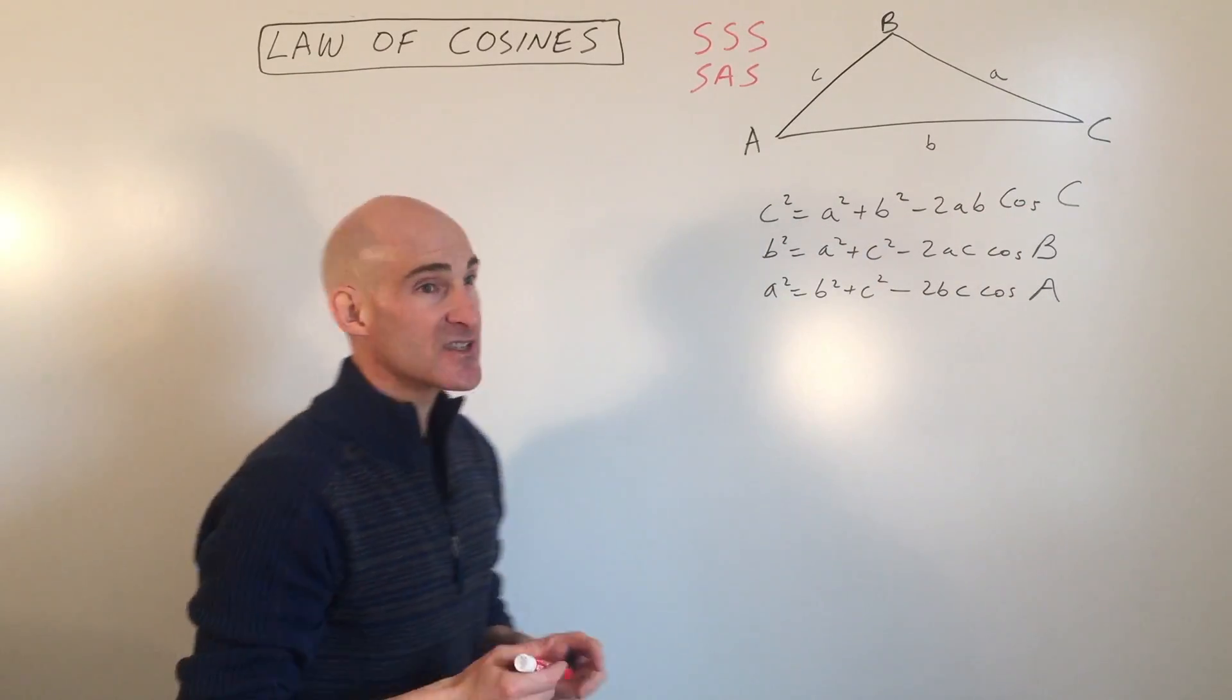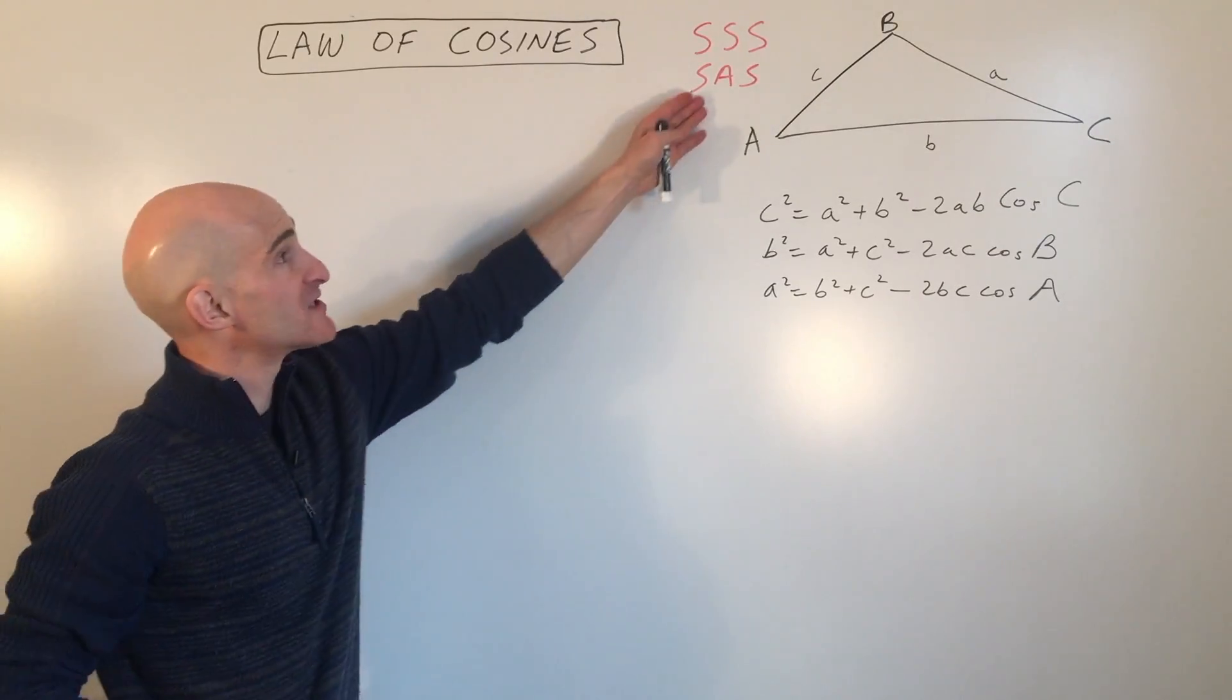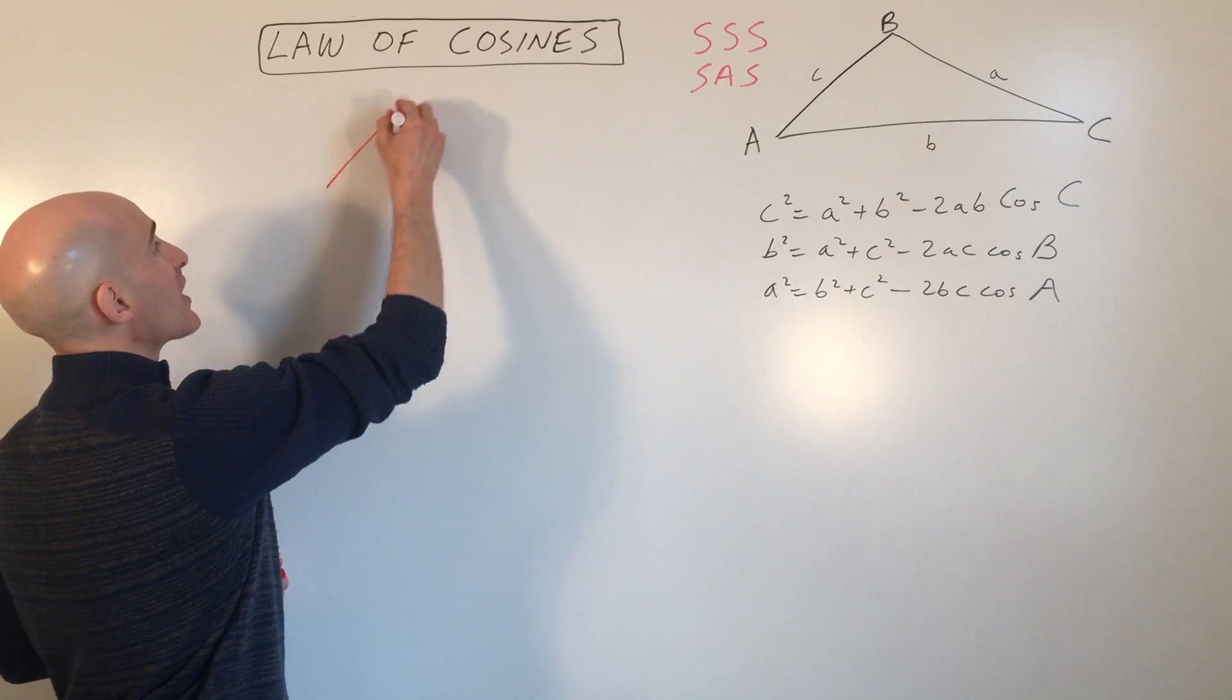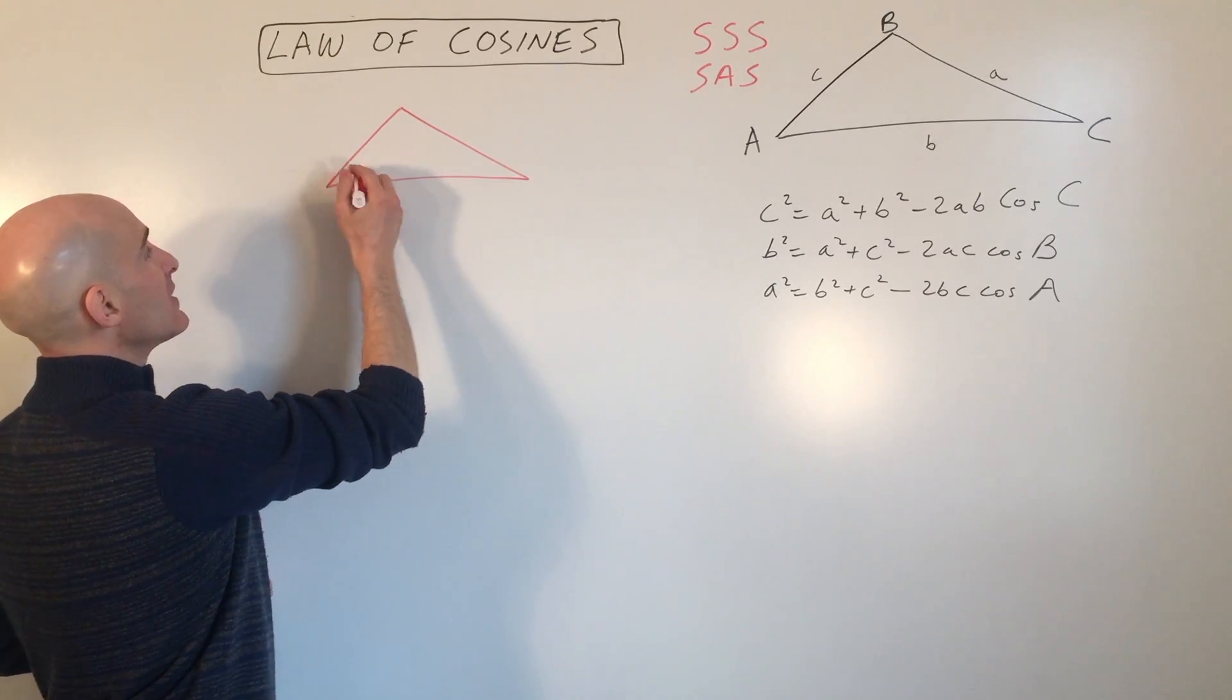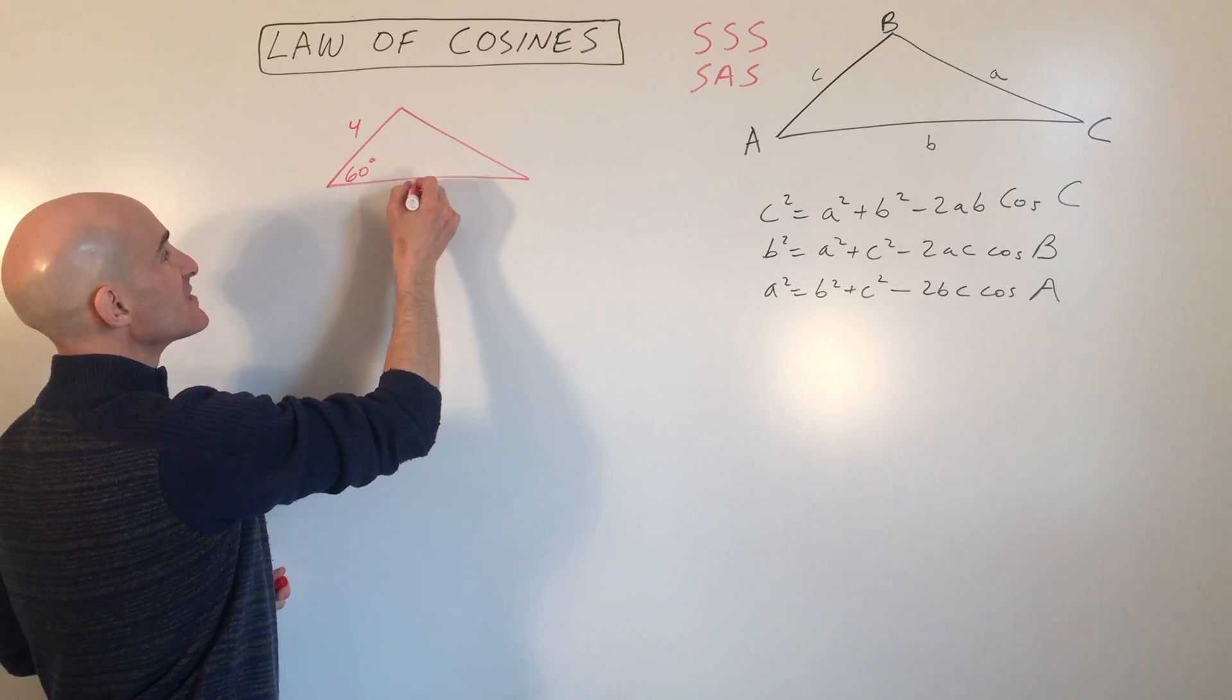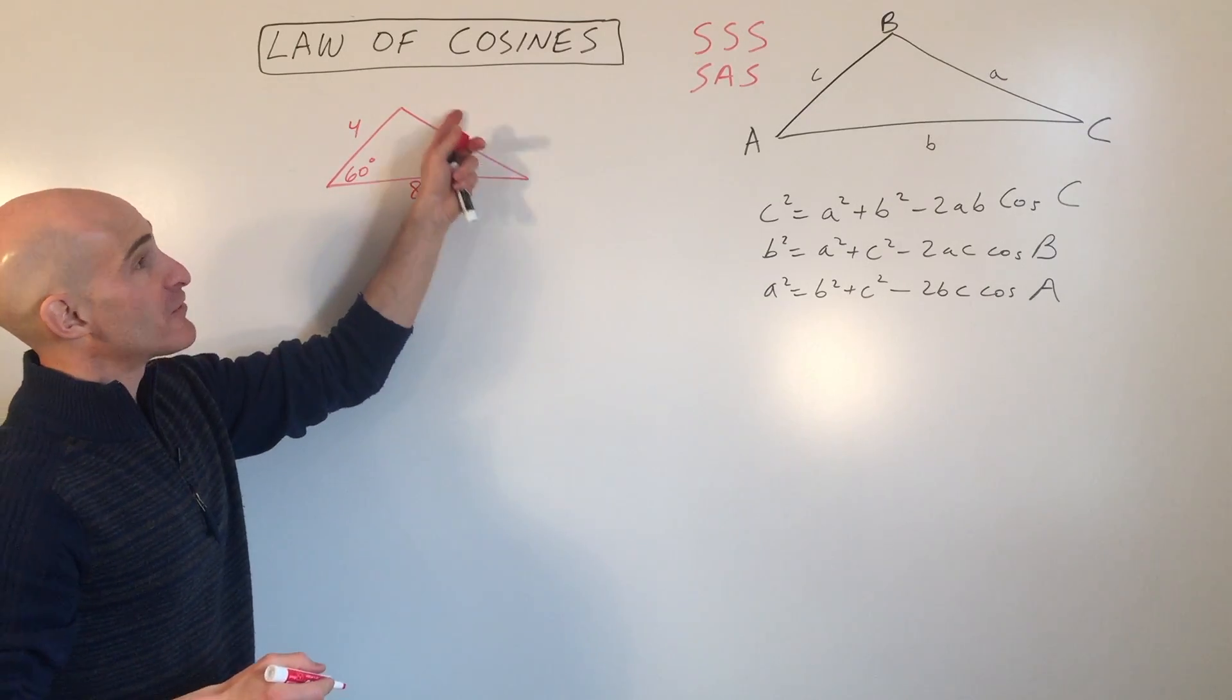So let me show you an example. The first example I'm going to show you, we're going to do the side angle side scenario. So say for example, they give you a triangle like this. Say this is 60 degrees. Say this is 4. Say this is 8. And you want to solve for this side over here. Let's just call this side C.